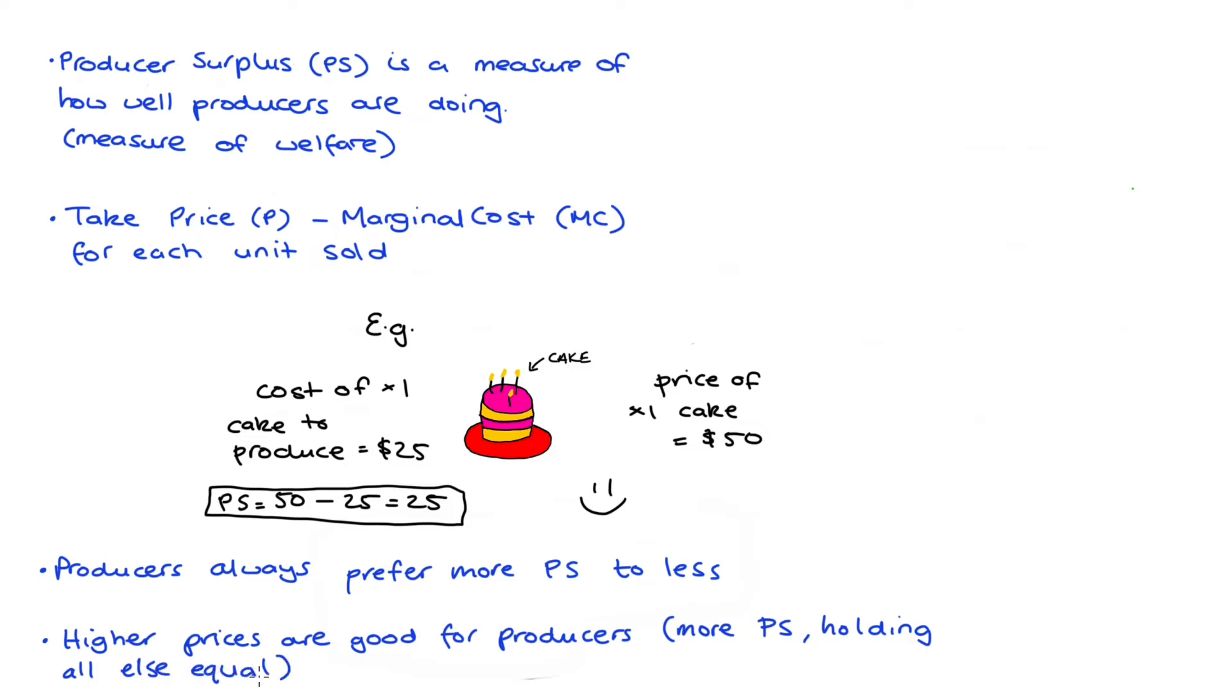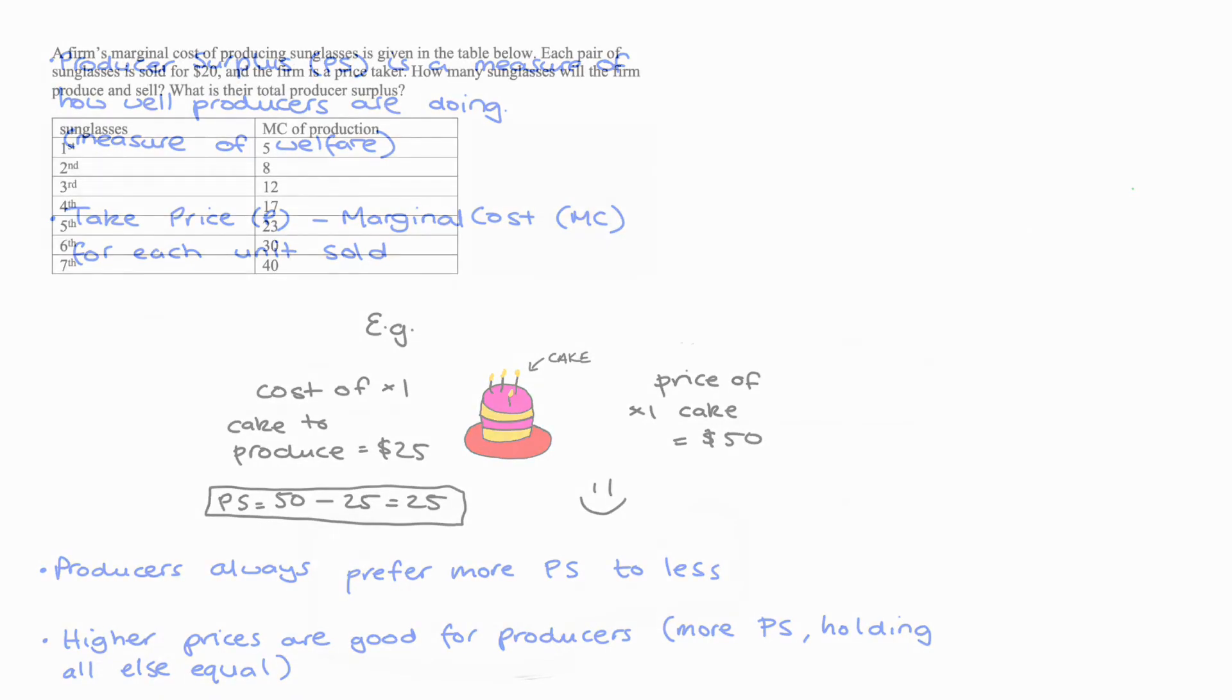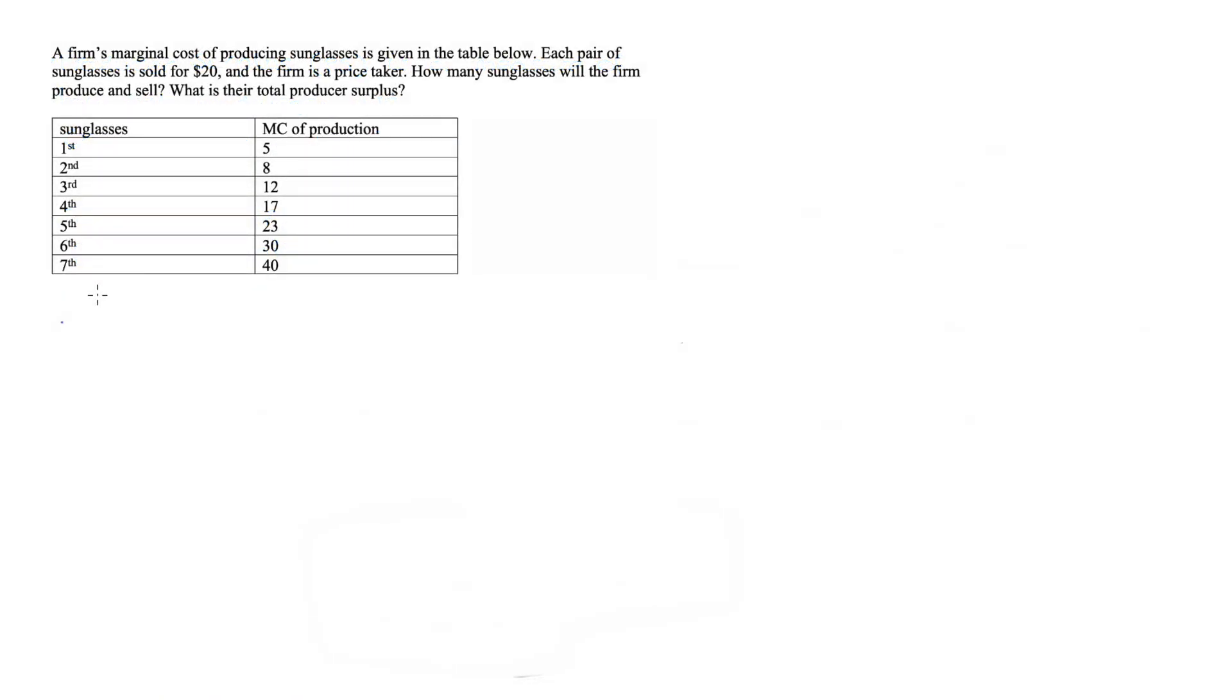Let's think about our first practice problem. A firm's marginal cost of producing sunglasses is given in the table below. Each pair of sunglasses is sold for $20 and the firm is a price taker. How many sunglasses will the firm produce and sell? What is their total producer surplus?